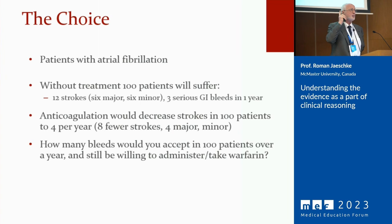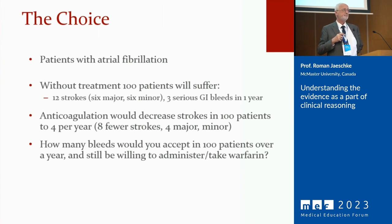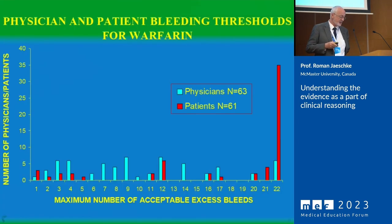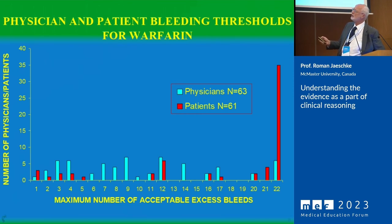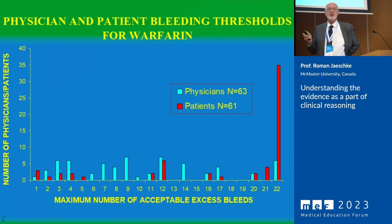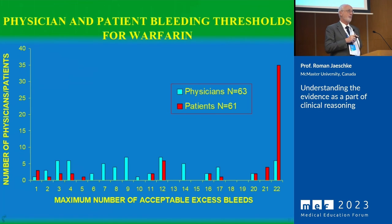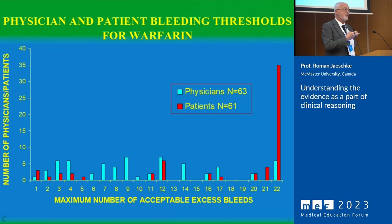Think about it — you can prevent 4 strokes in 100 people; how many bleeds among those 100 would you accept? The results show two columns: blue for physicians, red for patients. Some physicians would accept only 1 bleed; others would accept 8 bleeds for 4 fewer strokes. But the patients were saying: to prevent 4 strokes, I'm willing to accept 22 or 23 bleeds — the chart simply ran out of space. These physicians and patients have completely different preferences when faced with the same evidence.